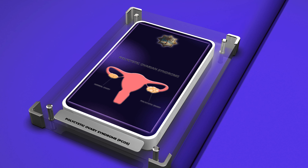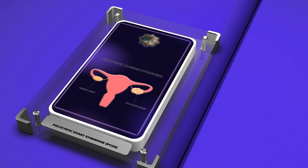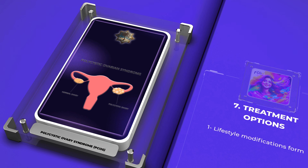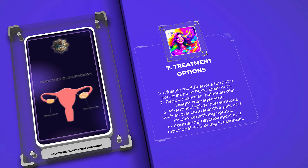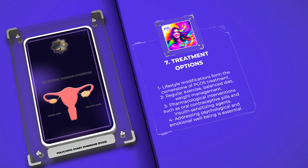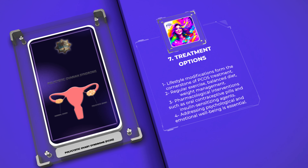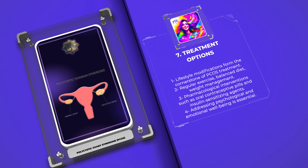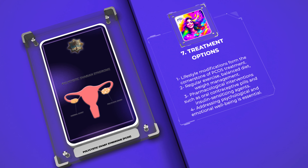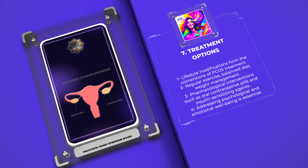Treatment options: The management of PCOS aims to alleviate symptoms, minimize long-term health risks, and improve quality of life. Lifestyle modifications, including regular exercise, a balanced diet, and weight management, form the cornerstone of treatment. Additionally, pharmacological interventions such as oral contraceptive pills, antiandrogens, and insulin-sensitizing agents are often prescribed to target specific manifestations of PCOS. Addressing psychological and emotional well-being is also essential in the overall management of PCOS.